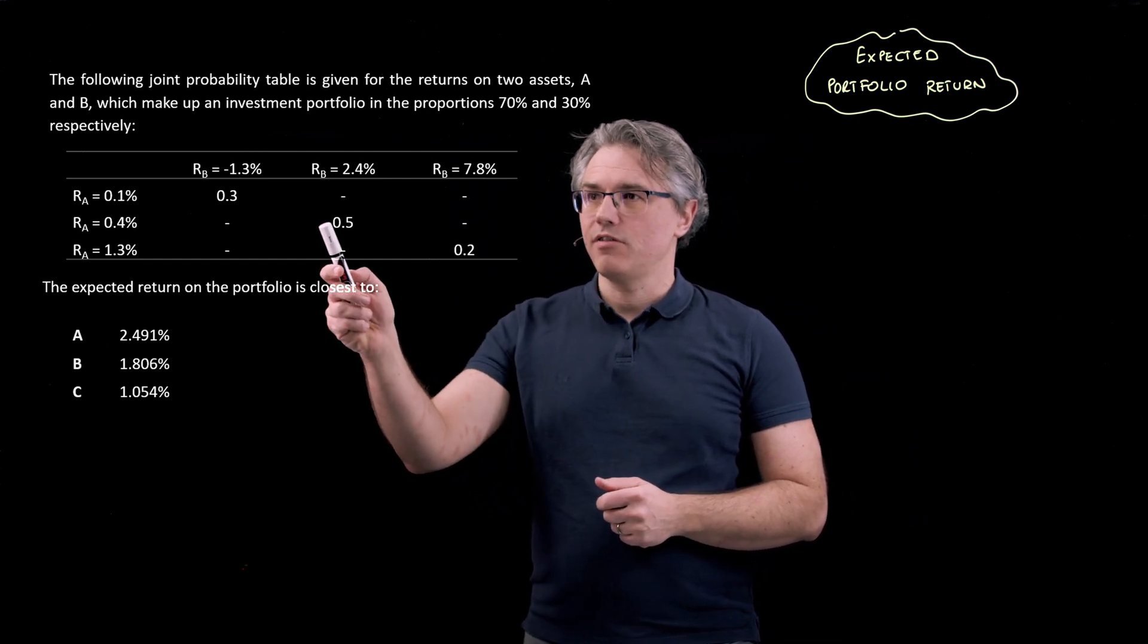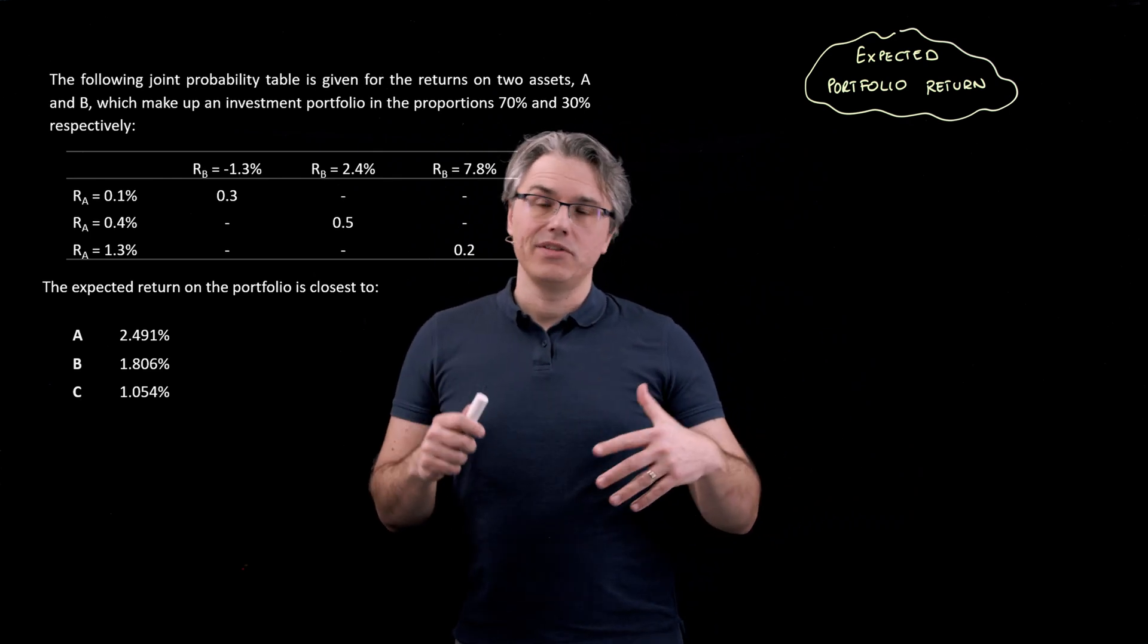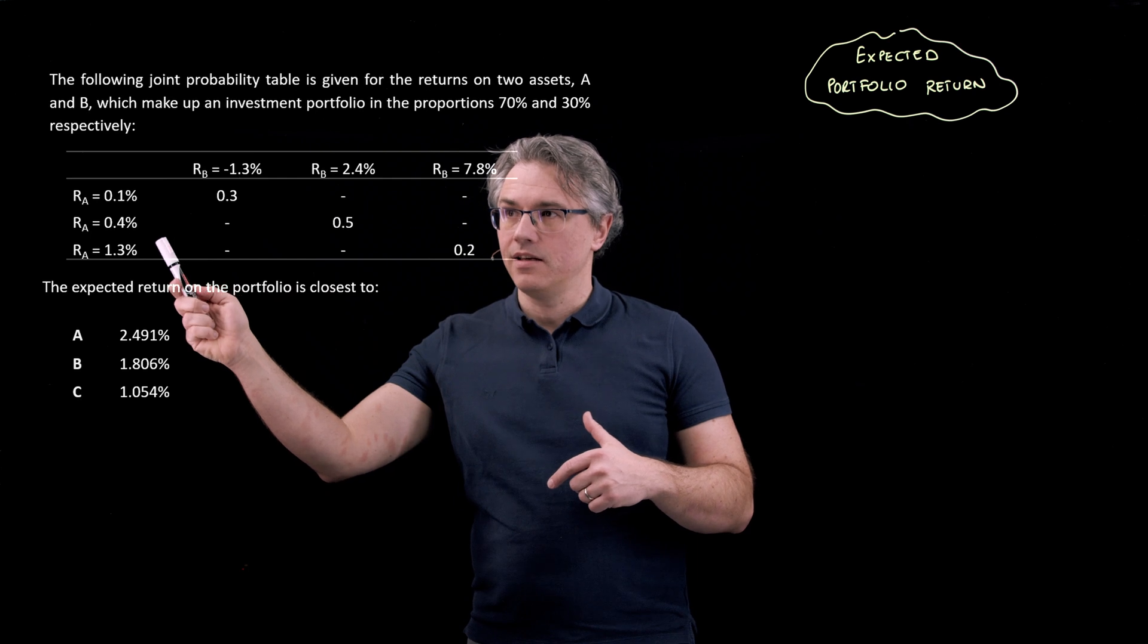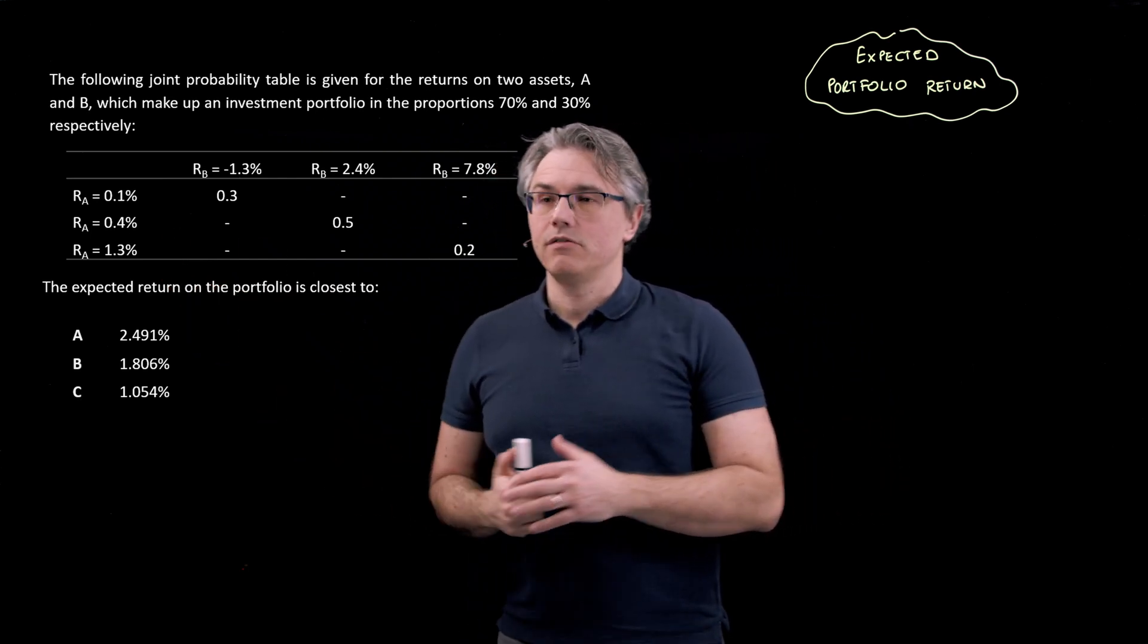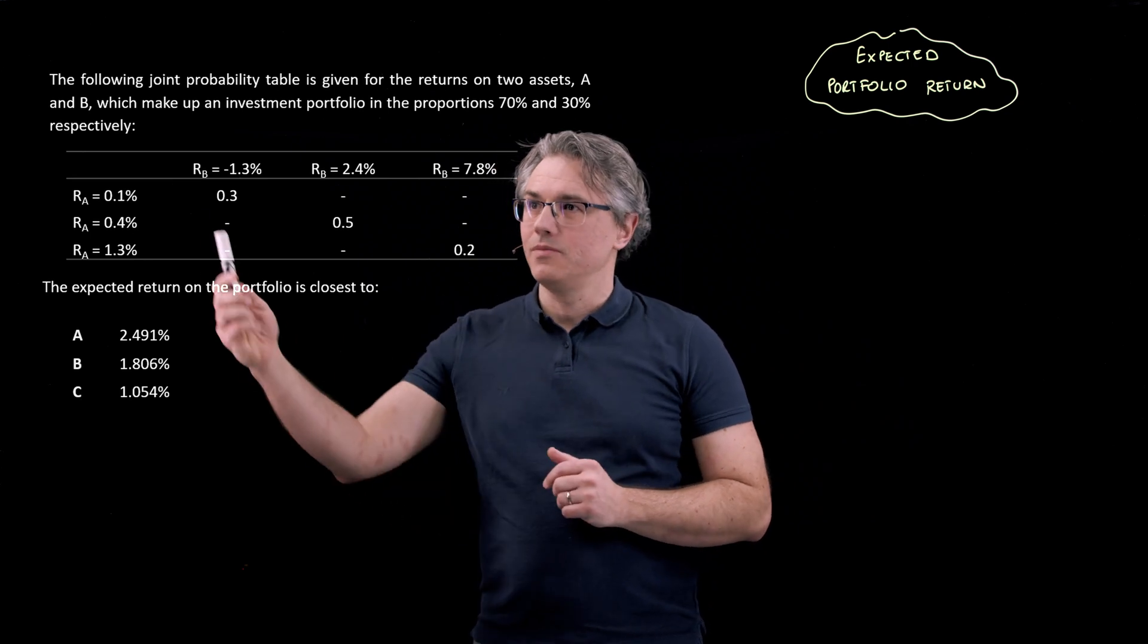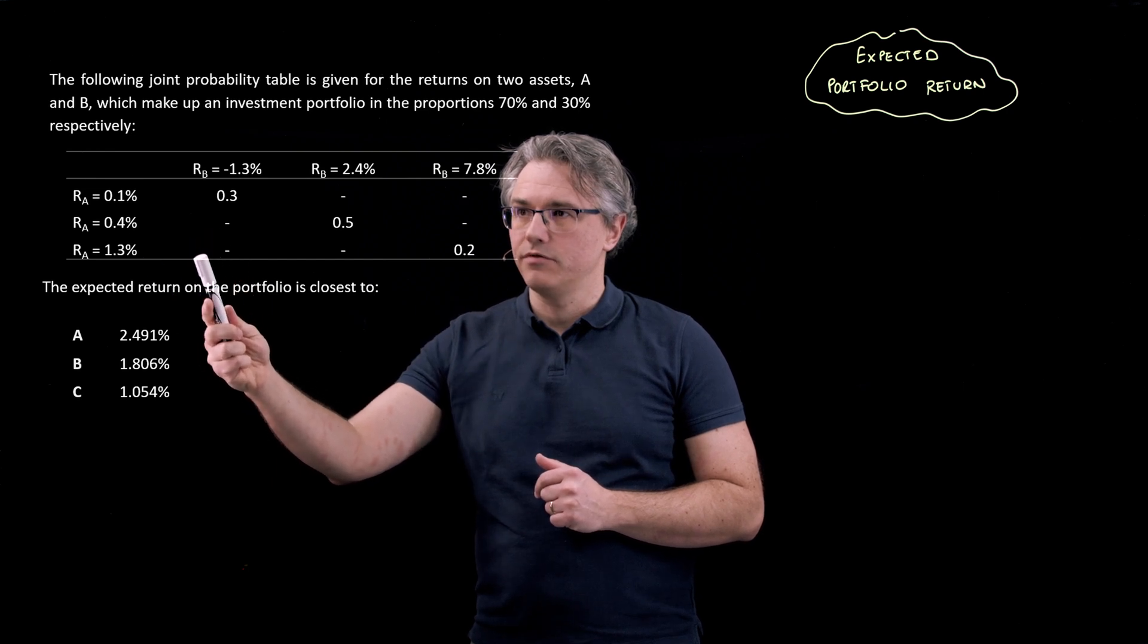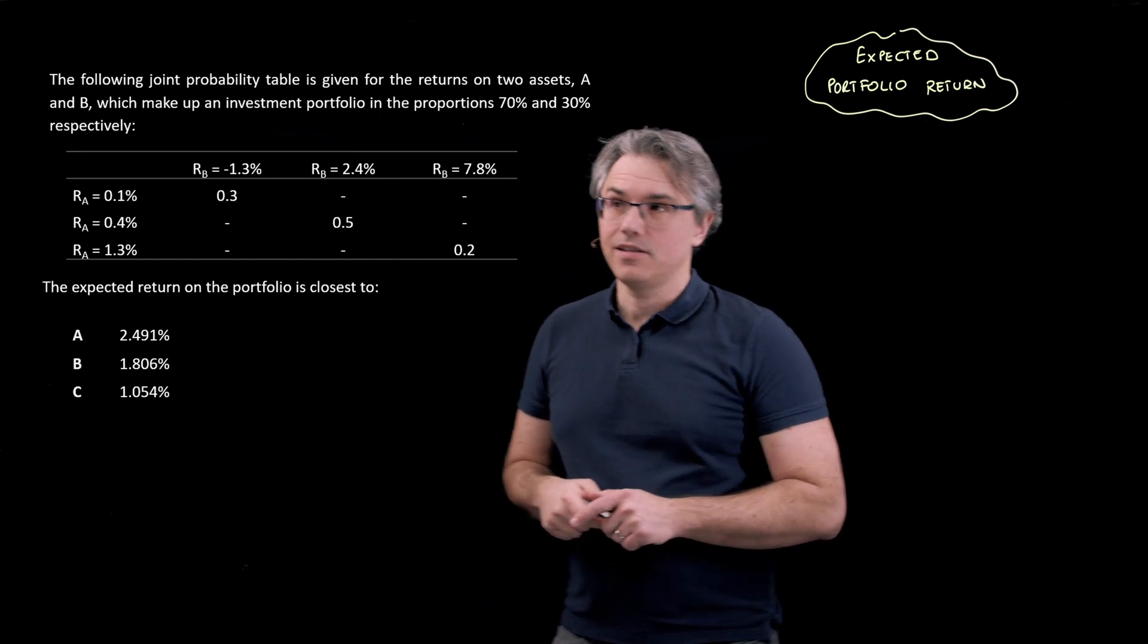So for example, this 0.5 means there is a 50% chance that at the same time, asset B will have a return of 2.4, whereas asset A will have a return of 0.4. But there is absolutely no way in which asset B can have a return of 1.3 and asset A can have a return of 1.3. There is zero probability of those two things happening at the same time.